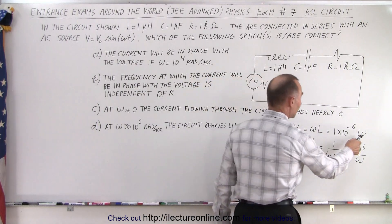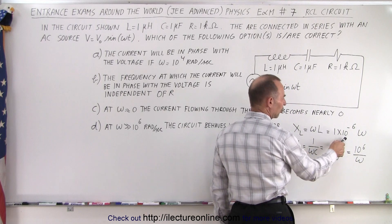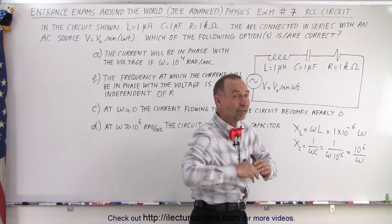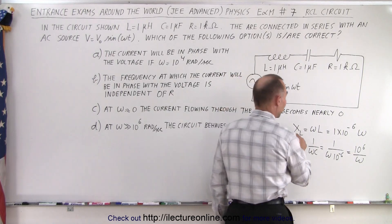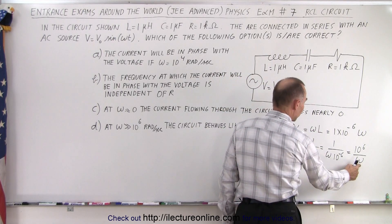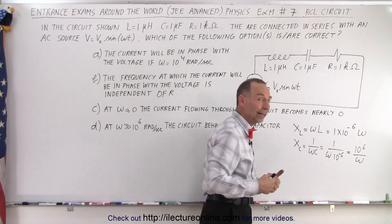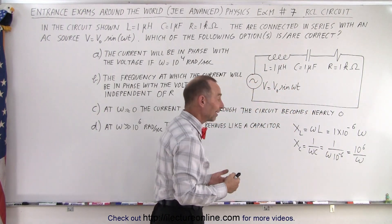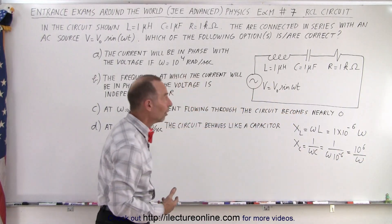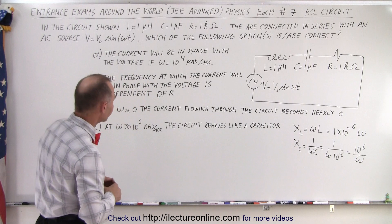Notice that if omega gets really big, X_L gets big, although with a very small inductor at 10^-6, omega would have to be huge for X_L to become large. When omega becomes large, X_C becomes very small and the capacitor almost becomes non-existent, although we're starting with a fairly large capacitor of 1 microfarad.